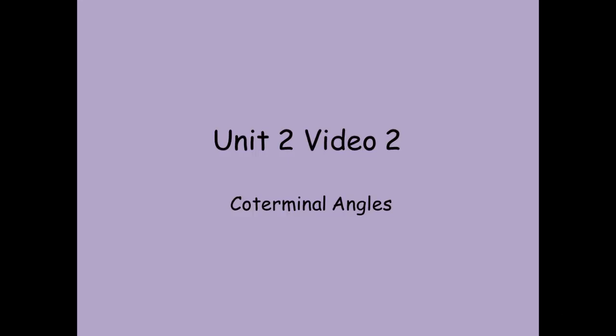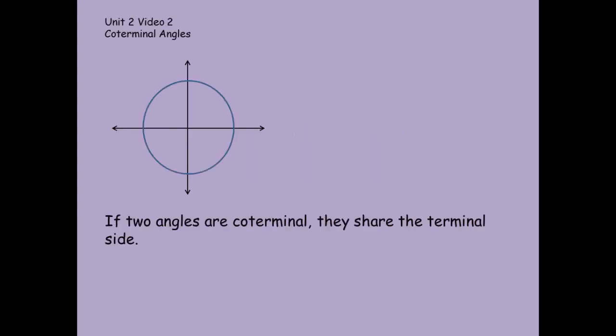Alright, so here's Unit 2, Video 2. We're going to talk today about some coterminal angles. We're going to first define what a coterminal angle is. If two angles are coterminal, then they share the same terminal side. When we draw angles on our unit circle, they're measured from the positive x-axis up to their terminal side. If we call this angle measure theta, this would be the terminal side of theta.